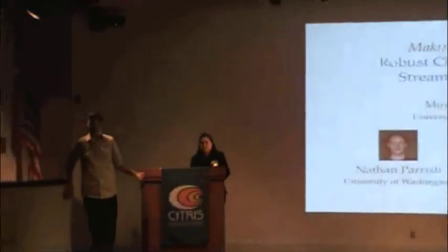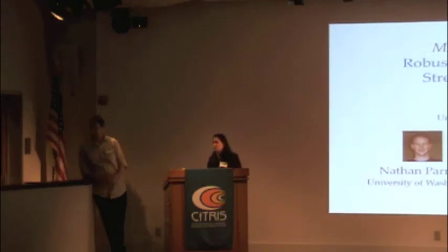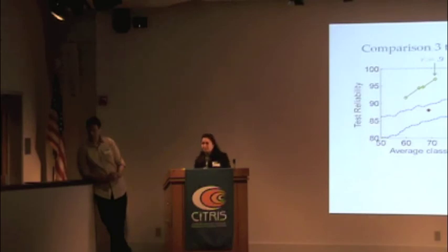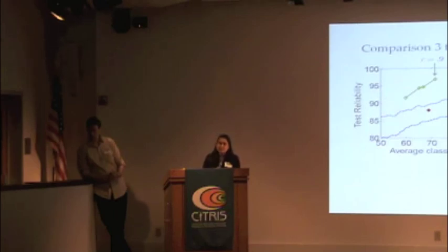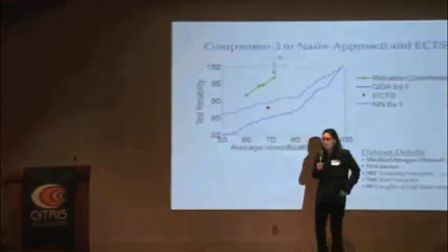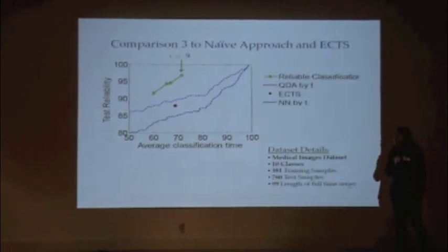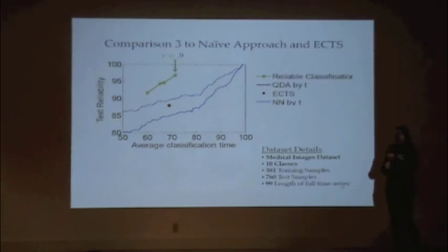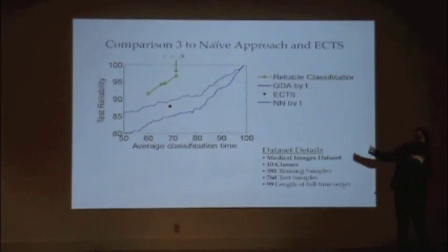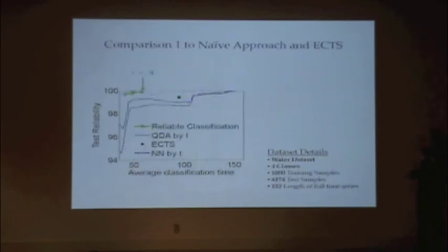We have time for a few questions. The question asks about computational scale: what are the actual time lengths being worked with? We're using the UCR repository — the plenary speaker today has a wonderful curated publicly available repository of datasets. The examples shown are pretty short: 99 time steps, 128, and 152. I don't care if that's seconds or milliseconds — it's just the number of data points. When you get up past about 10,000, things start to really slow down, depending on what you choose. With a linear constraint set like the box constraint, you get analytic solutions and things become much faster.